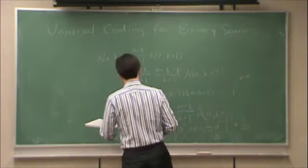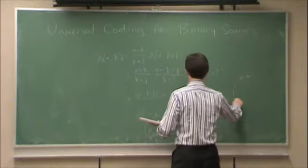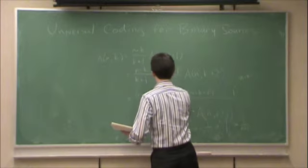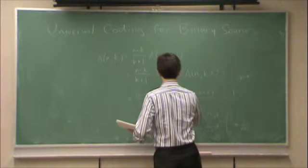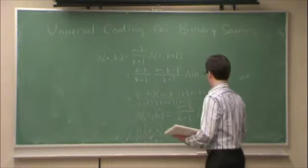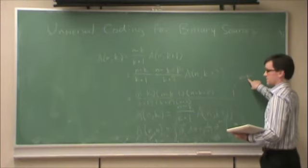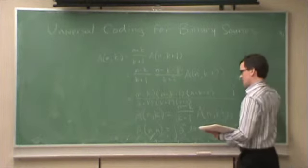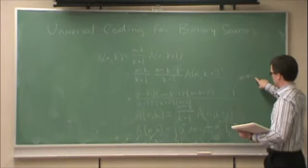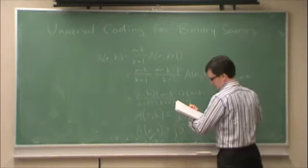So, in the denominator, I have k plus 1, k plus 2, k plus 3, and so on, up to after n minus k minus 1 terms, I end up with k plus n minus k minus 1 plus 1 is equal to n.